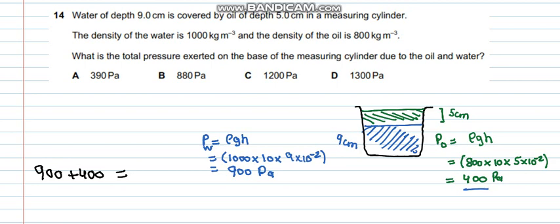So the total pressure is 900 plus 400. So the answer is 1300 pascals. So D is the correct answer. Do like and subscribe my channel for more videos. Thank you.